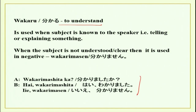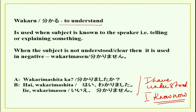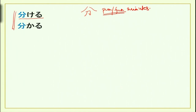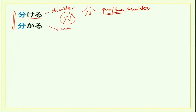So you can see: vakaru means to understand. It is used when the subject is known to the speaker — he is explaining something he knows about, and after this, he wants to know if the listener has understood. The answer could be: vakarimasu ka — hai, vakarimasu — or iiye vakarimasen deshita. I have understood, I know now. We can say both these things. Now let us do the kanji for vakaru — it is a simple kanji and you have done it earlier as pun or hun, which means minutes.